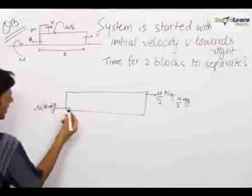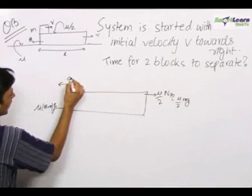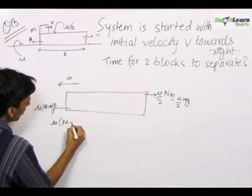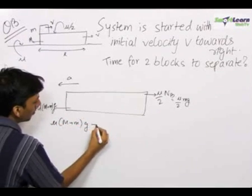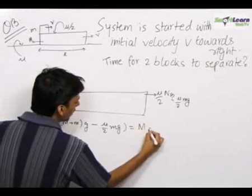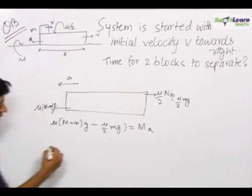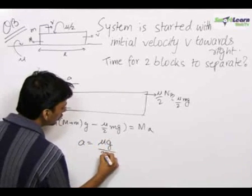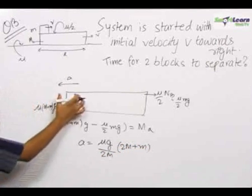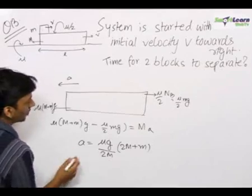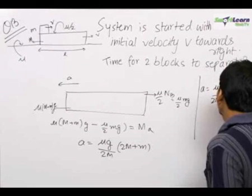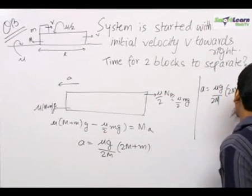The acceleration of the lower block is in the left direction; let it be A. Writing the equation: mu(M plus m)g minus (mu/2)mg equals M times A. Solving this gives acceleration A equal to (mu g / 2M) times (2M plus m), or equivalently A equals mu g(M plus m) / (2M) ... wait — the acceleration of the lower block is A equals mu g upon 2M into (capital M plus small m).